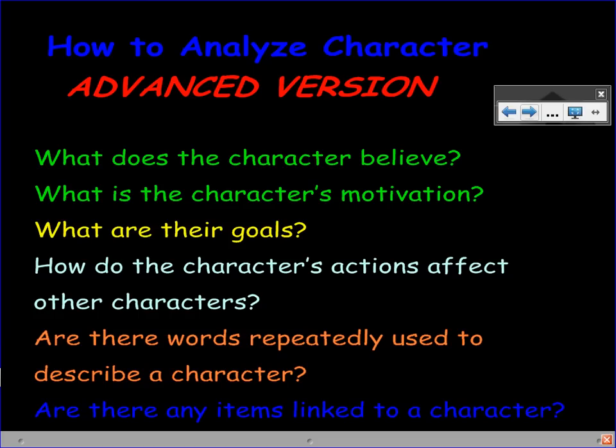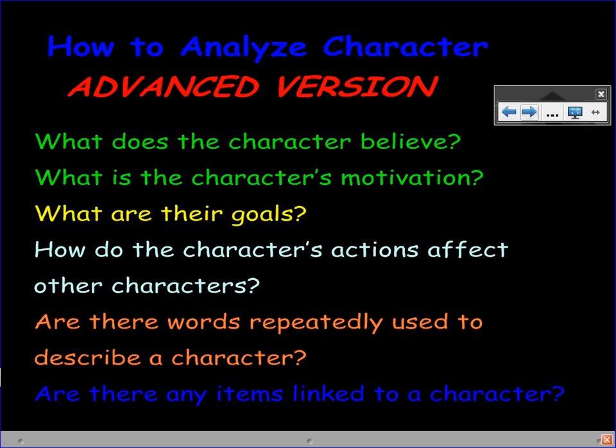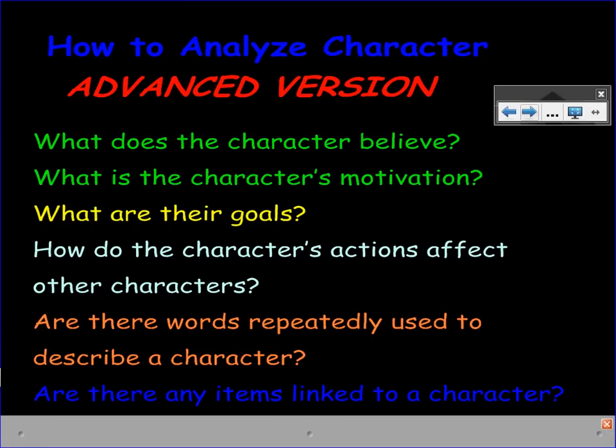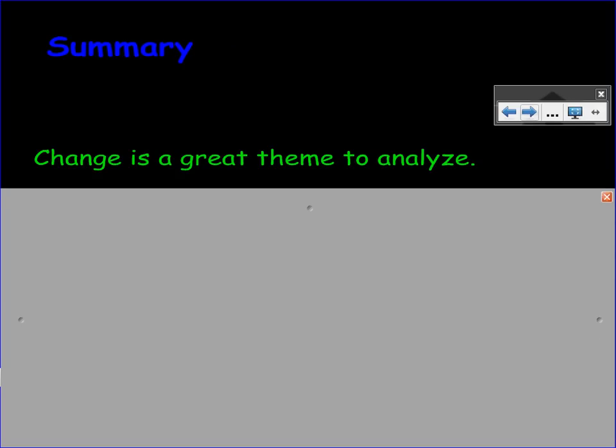Sometimes in movies it can be a color. Or, like, if anybody ever watches Sixth Sense or something, the color red is supposed to be very linked to different actions going on there. So, characters in the same way may have items linked to them. And sometimes it's very subtle and it's kind of hidden. So, that's kind of the advanced version. That's just a basic idea and an advanced idea of how to analyze character so that we can analyze change.